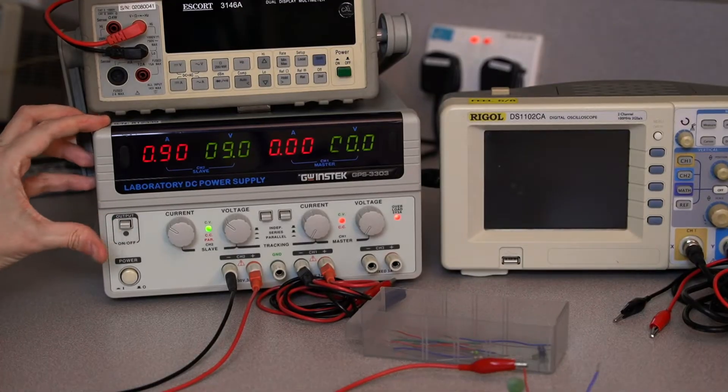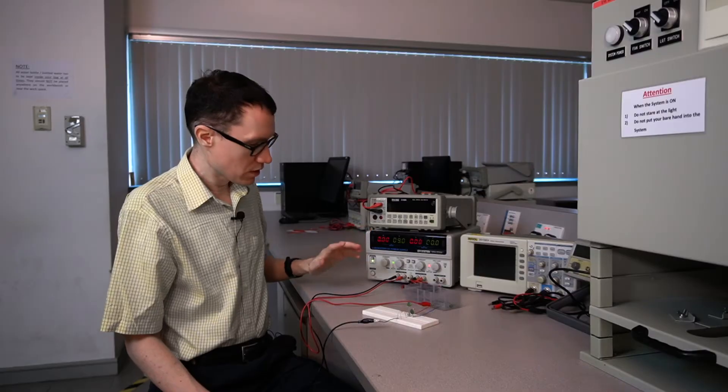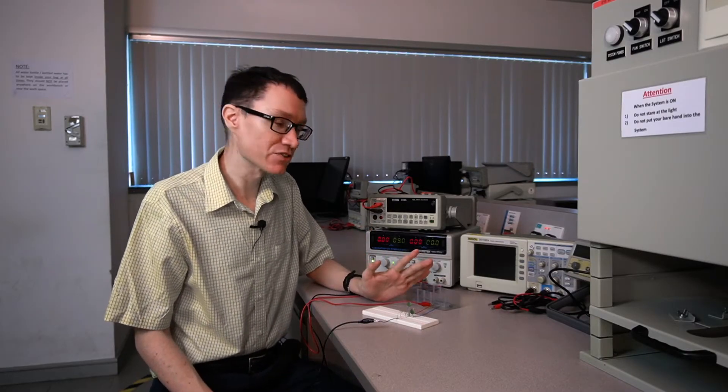I've set our DC power supply to 9 volts. I'm going to turn it on. All we've done at this point is bias the transistor. I'd now like to turn on the function generator.